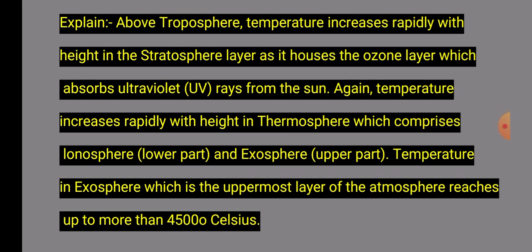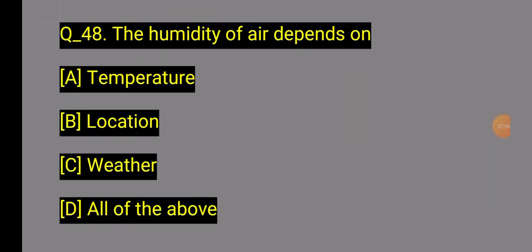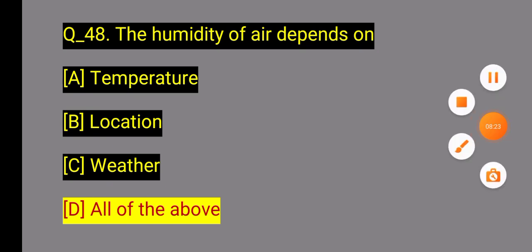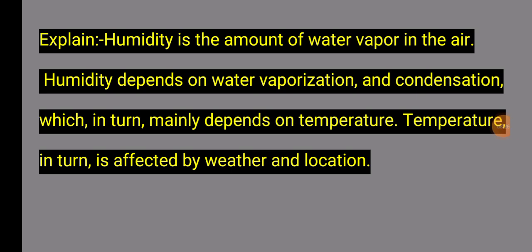Question 48: What does the humidity of air depend on? Option D: All of the above — temperature, location, and weather. Question 48 Explanation: Humidity is the amount of water vapor in the air. Humidity depends on water vaporization and condensation, which in turn mainly depends on temperature. Temperature in turn is affected by weather and location.